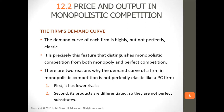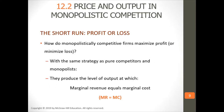The demand curve of each firm in monopolistic competition is highly, but not perfectly, elastic, and this distinguishes it from monopoly and perfect competition. There are two reasons why the demand curve is not perfectly elastic like a perfectly competitive firm: it has fewer rivals, and its products are differentiated, so they're not perfect substitutes. Monopolistic and competitive firms maximize profit by setting output where marginal revenue equals marginal cost — that's how they maximize profit in any market.